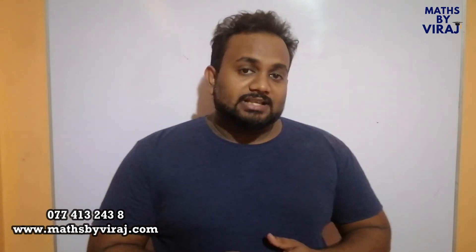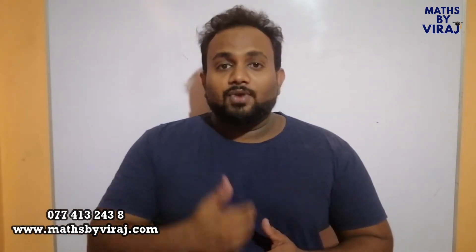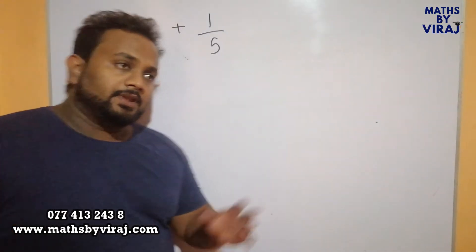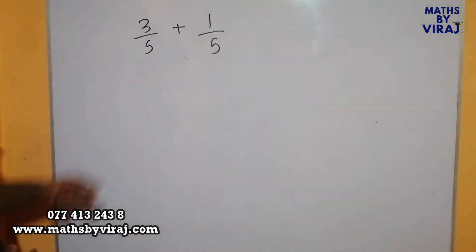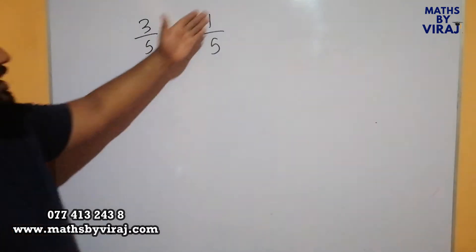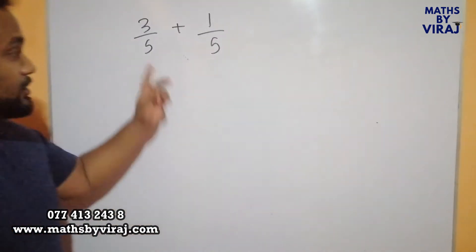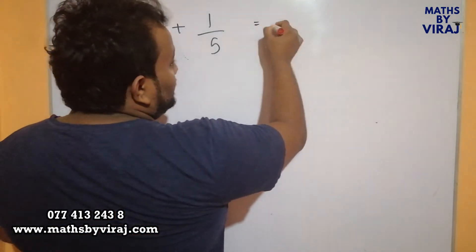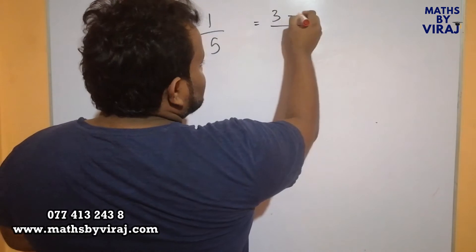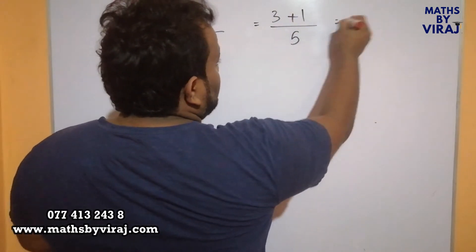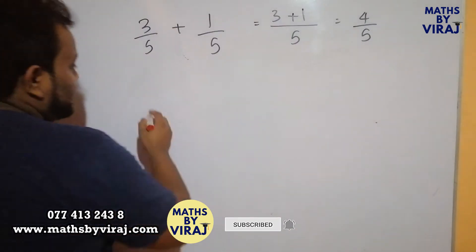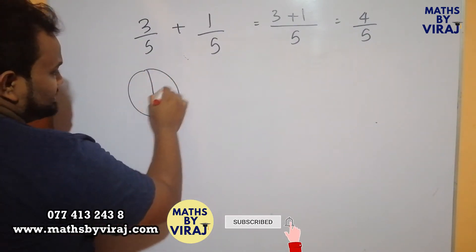Later on we will look at examples where the denominators are different and how we are going to add and subtract fractions. If you look at this example, we have 3 over 5 plus 1 over 5. You see that the denominators are the same. When the denominators are the same, we can simply add the numerators, which gives us the answer as 4 over 5.